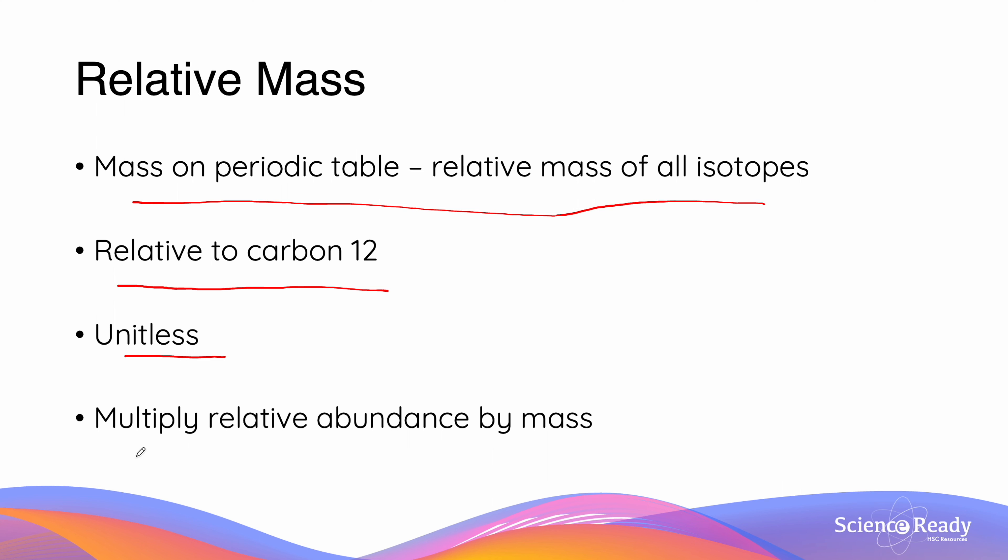When calculating relative mass, you will be given a number of percentages for each of the different isotopes, which is known as the relative abundance. Simply take the relative abundance given, multiply it by the masses of each isotope, and then add them together.